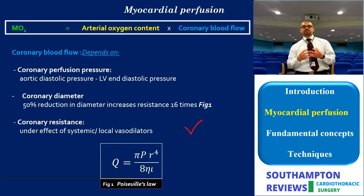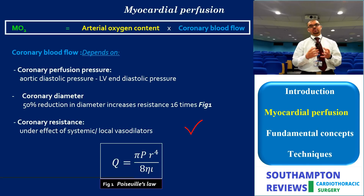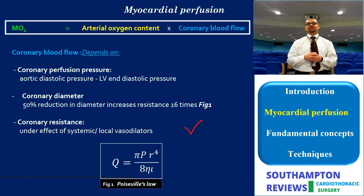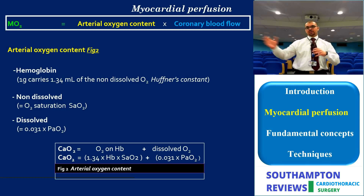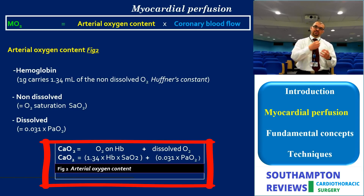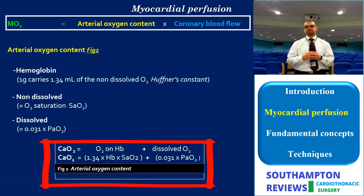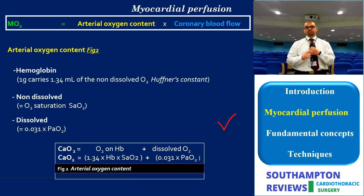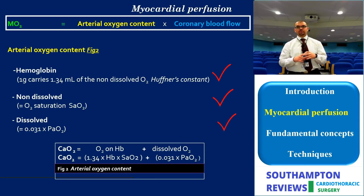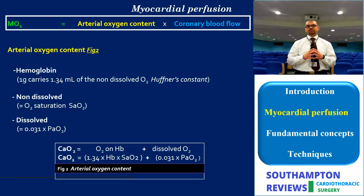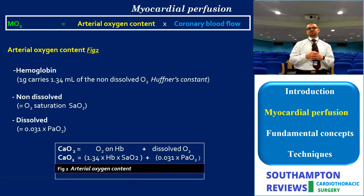Coronary resistance is also governed by local and systemic vasodilator effects. This is important in this context because we are on bypass, which profoundly elicits all local and systemic vasodilator substances. The other arm of the equation is arterial oxygen content. CaO2 equals oxygen bound to hemoglobin plus dissolved oxygen. The full equation is: CaO2 = 1.34 (Hüfner's constant) × Hb + 0.031 × PaO2. Whenever faced with poor oxygenation, you need to look at partial pressure, SaO2 (oxygen saturation), and hemoglobin content.